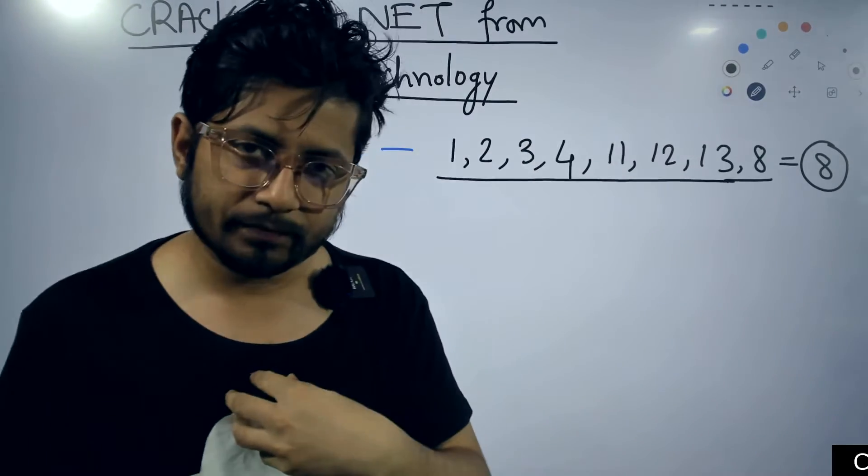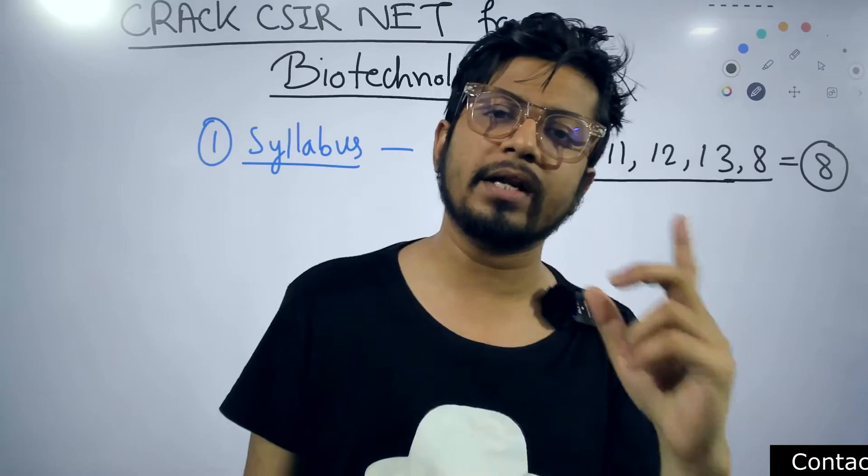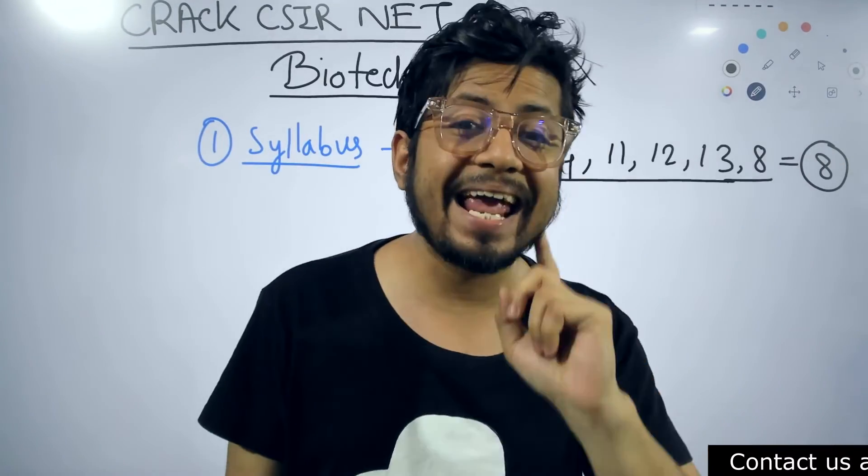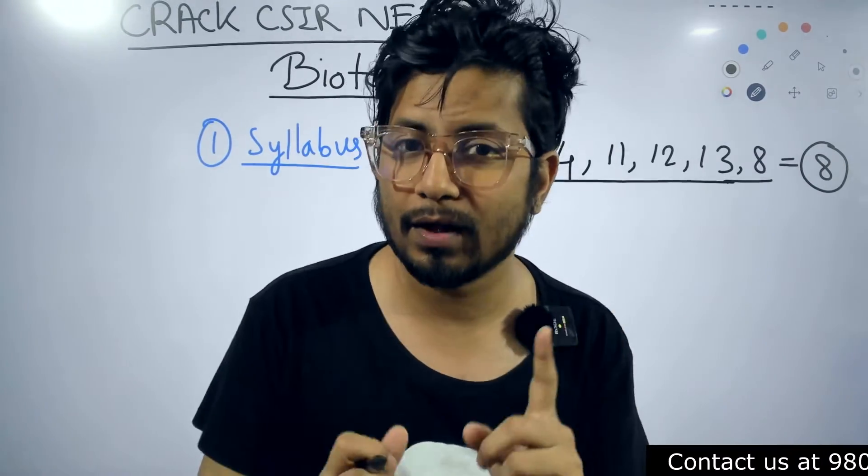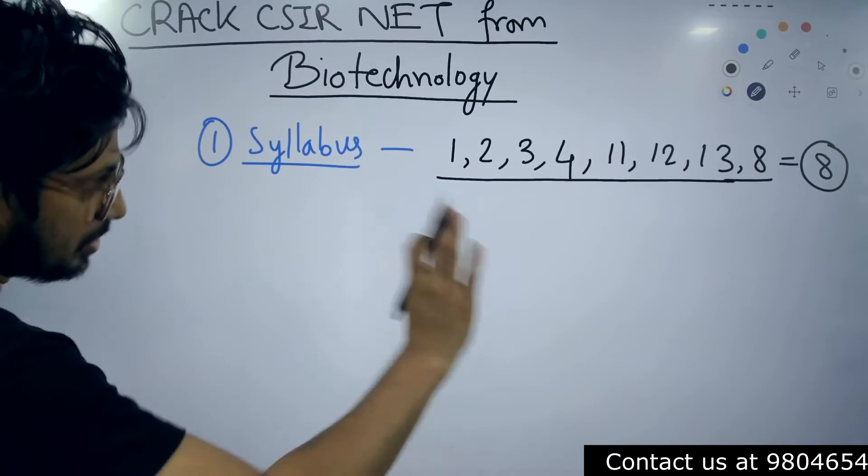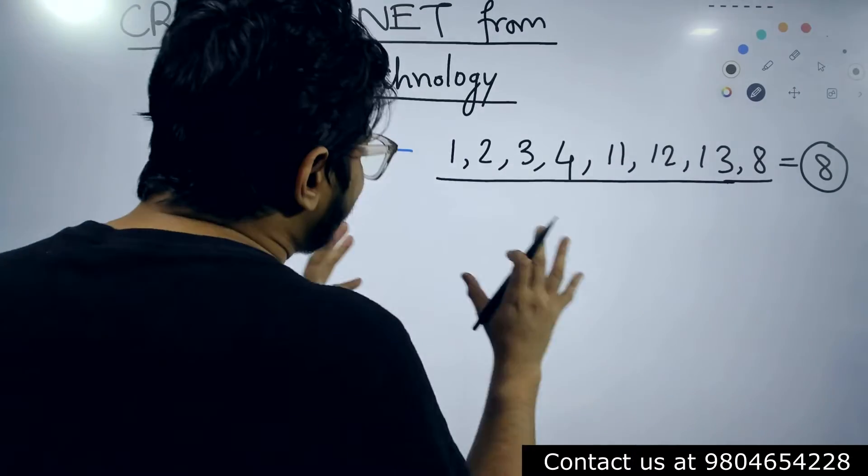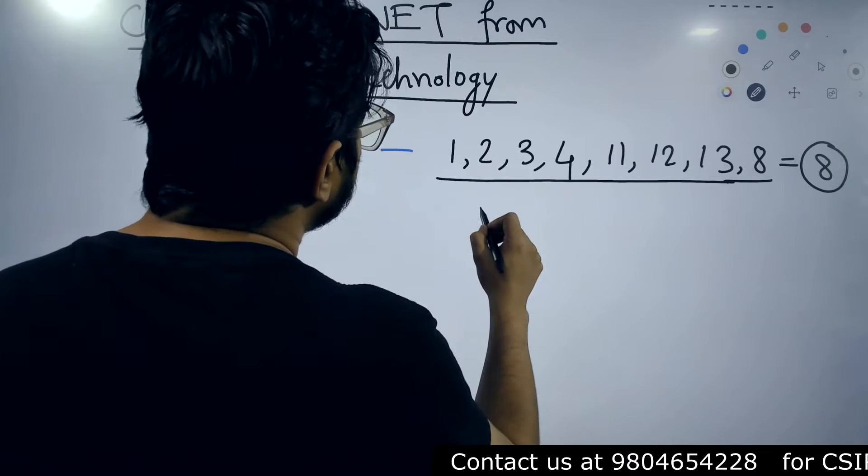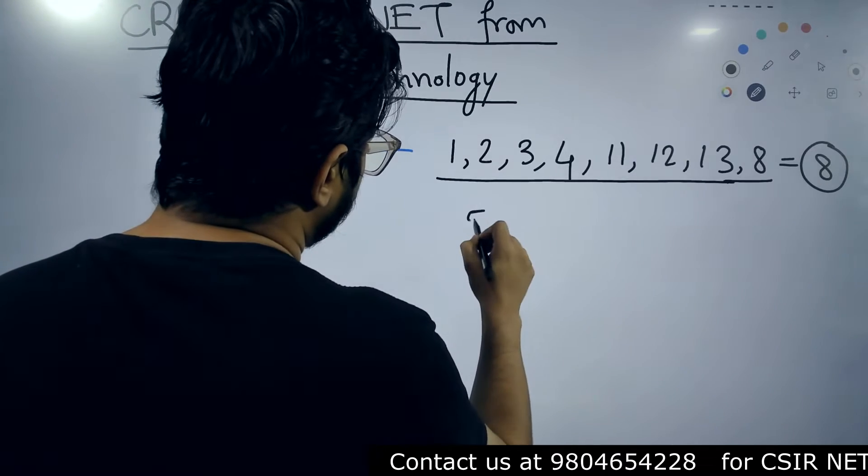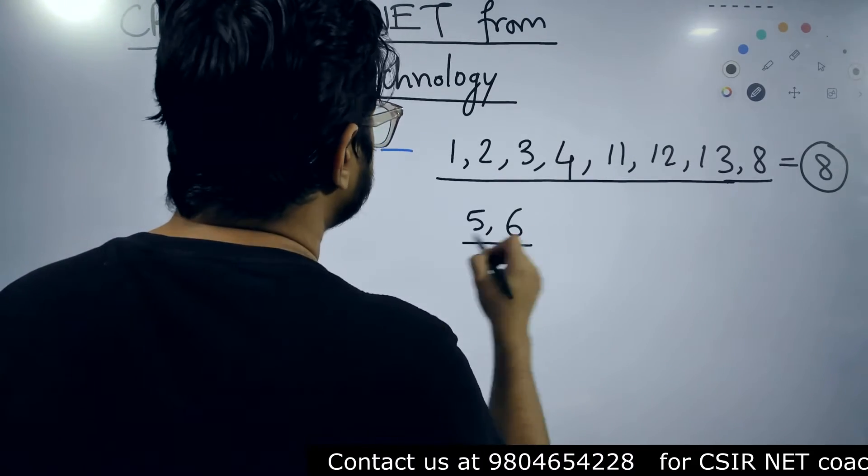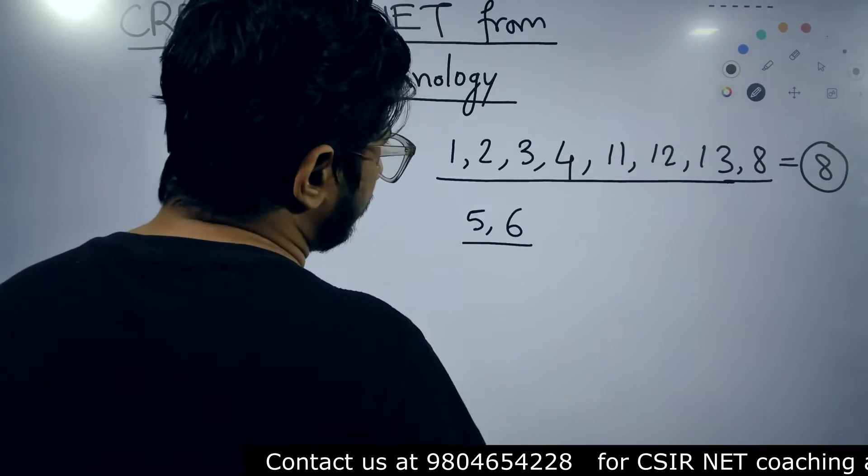And individual, I know, I knew individuals who qualified CSIR NET with only 8 units prepared out of 13. Yes, it is possible. But with a little extra preparation, you can prepare unit 5 or unit 6. You can also prepare these 2 units.